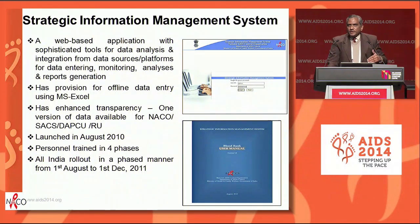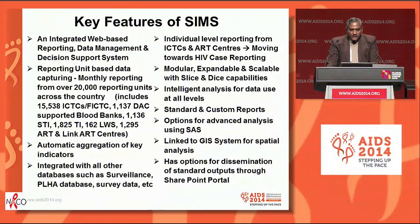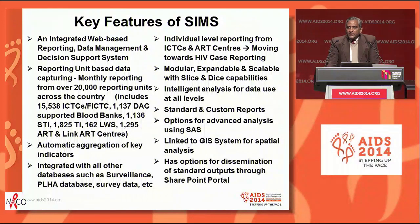There was a decision consciously made that we will not wait for the total application to be developed and implemented, but as we go along for different programs, we'll develop the applications and get it going. The key features of the strategic information management system: this is a system which covers over 20,000 reporting units. There is automatic aggregation of the key indicators, and this is also integrated with other databases like surveillance, PLH database, and survey data, so that if we want to triangulate to see the district situation, we can do that.